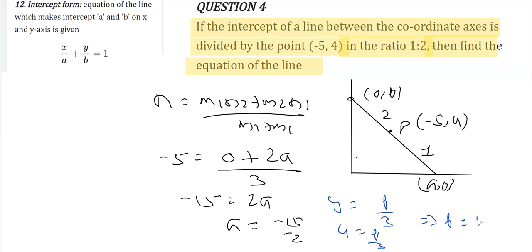Now let's plug in this value of a and b. We get x/a—a is -15/2—so I can write this as x over (-15/2) plus y over b, where b is 12, equals 1.